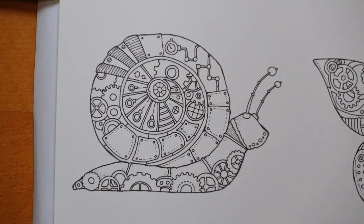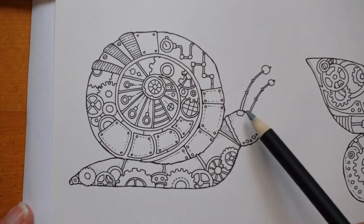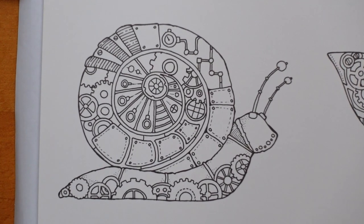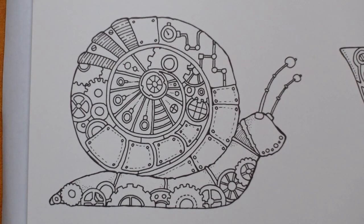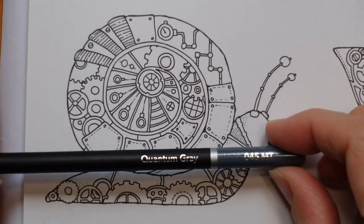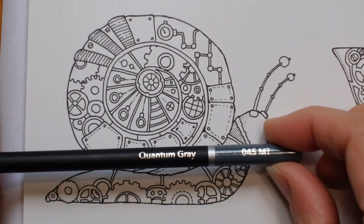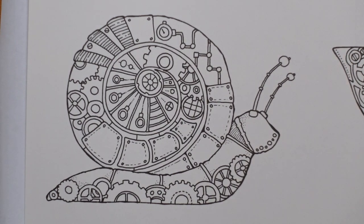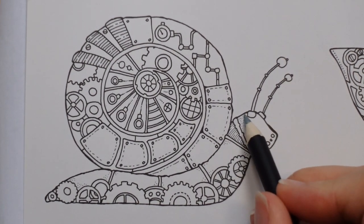Now what I thought I would do is we have our snail's body and then we have these steampunky cogs and objects on it. So what I'm gonna do is I'm gonna use one colour for the main body and then another colour for the cogs and things. I think it might just help to separate the items and I think it might be more fun that way. We'll see if it works. So I'm starting with my quantum grey. Now this is the darkest of the greys. It's a sort of bluish colour, bluish grey.